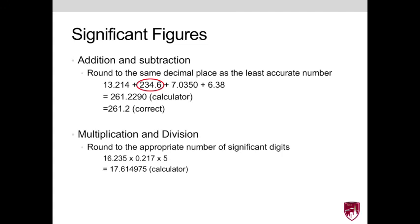For multiplication and division, round to the appropriate number of significant digits. And for example, if we have 16.235 times 0.217 times 5, your calculator or your code will spit out 17.614975.